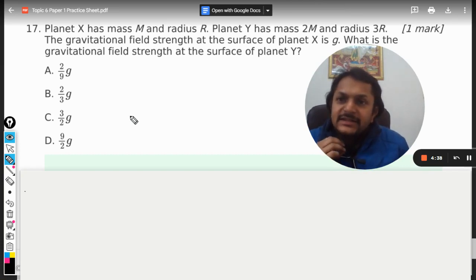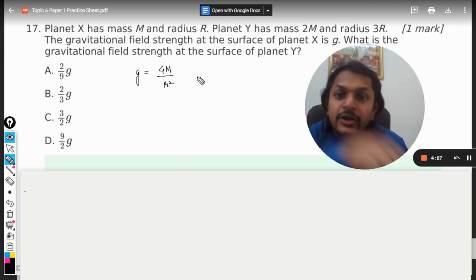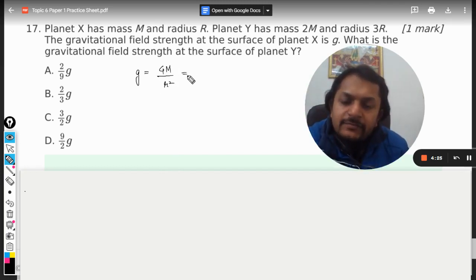To do this question, first of all we need to write the expression for gravitational field strength. g is given by GM/r² at any distance r, but if the body is on the surface of the planet